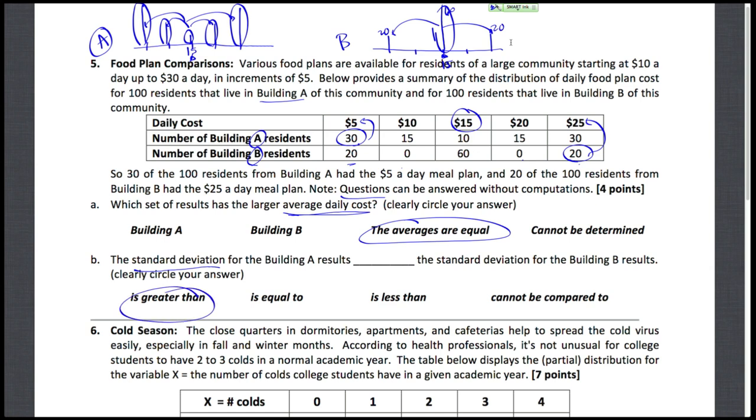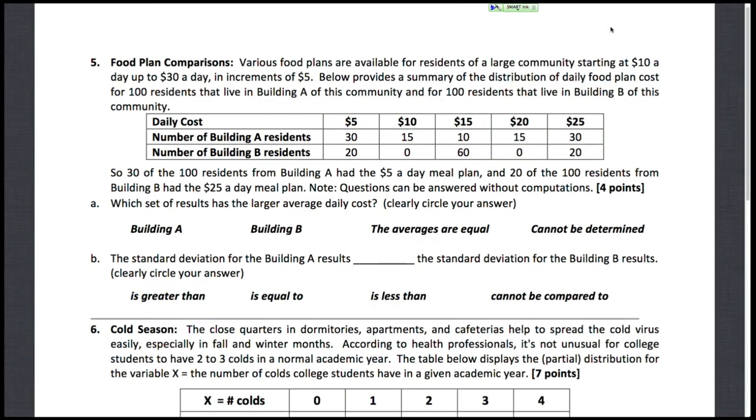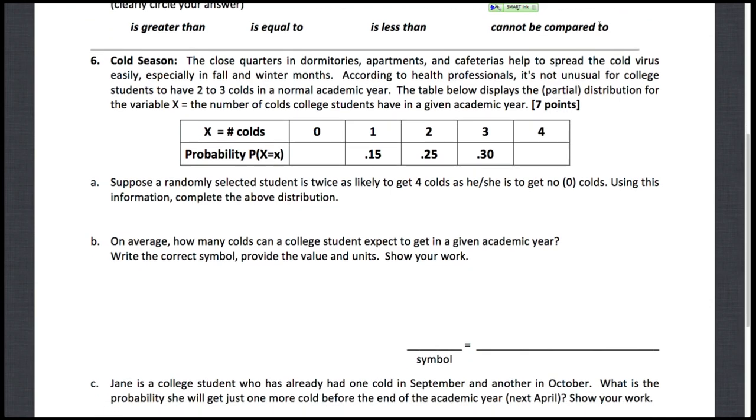The average distance of the values from the mean for Building B, because most are at the mean here, and not very many are far away, whereas most are far away from the mean in Building A, and very few are right at the mean. All right, that's question five. Let's take a look at question six. Cold season. So here, we live in close quarters.